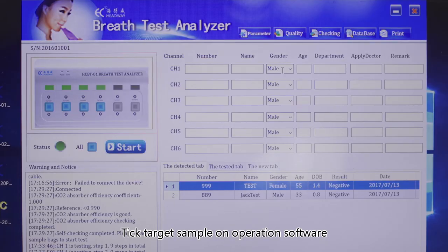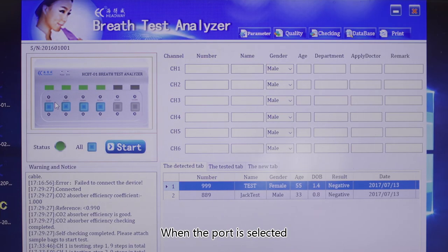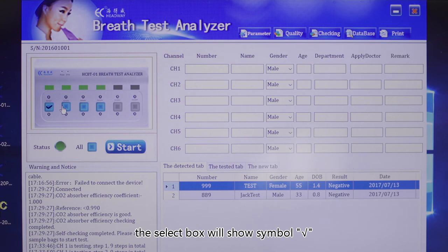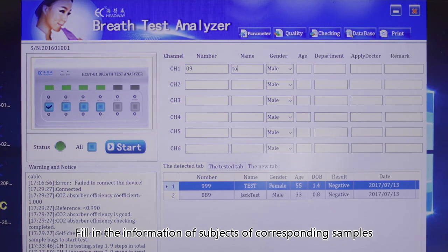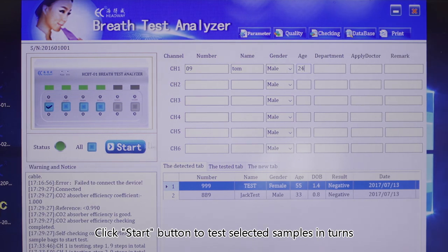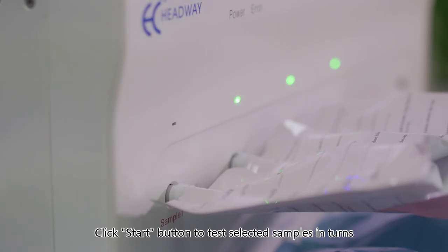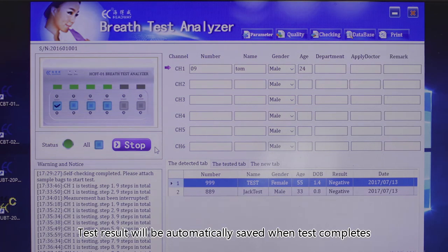Tick target sample on operation software. When the port is selected, the select box will show a checkmark symbol. Fill in the information of subjects of corresponding samples. Click Start button to test selected samples in turns.